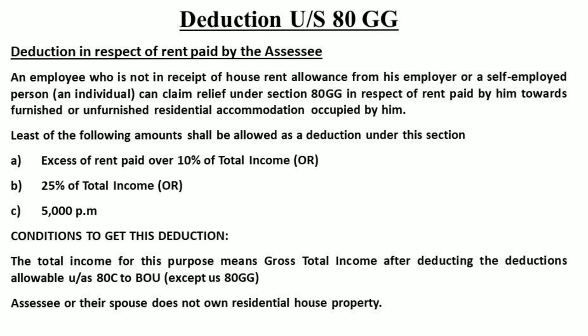For this purpose, 'total income' means gross total income after deducting deductions available under Sections 80C to 80U, excluding Section 80GG itself. So total income equals gross total income minus deductions under 80C to 80U, but minus 80GG is excluded from this calculation.